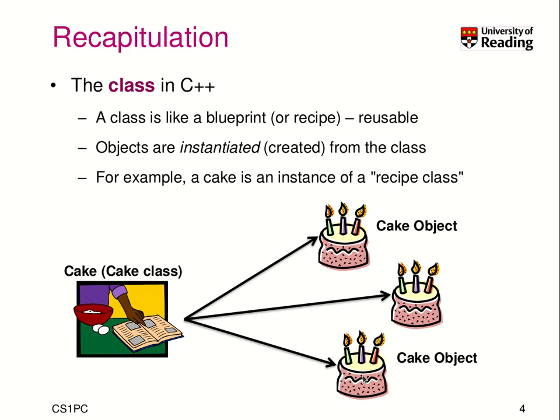Like on your table — you're sitting in front of the table — you have three cakes in front of you. It could be three chocolate cakes, but these are not the same object. They have the same recipe, the same blueprint maybe. One could be a banana cake and the others chocolate cake, but they are different objects in the real world.